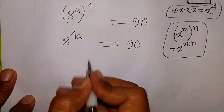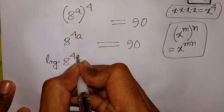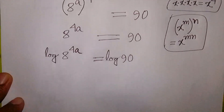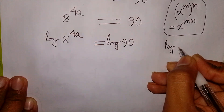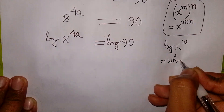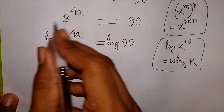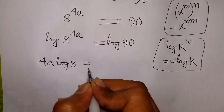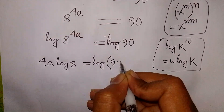Now we apply log on both sides. So we can write log of 8 power 4A is equal to log of 90. Log of 90 can be written as log of 9 times 10.